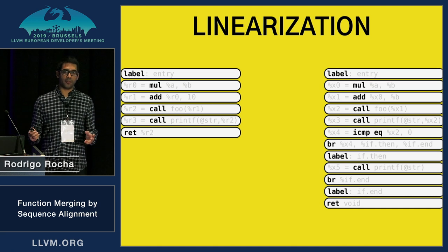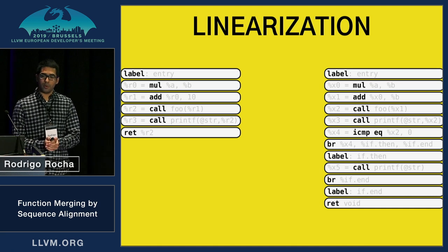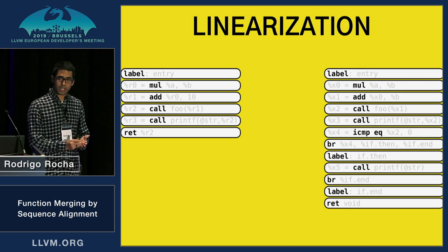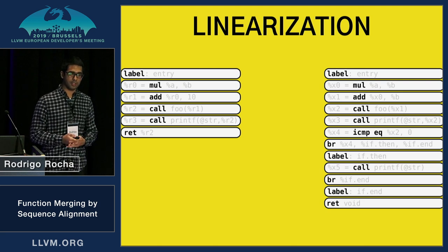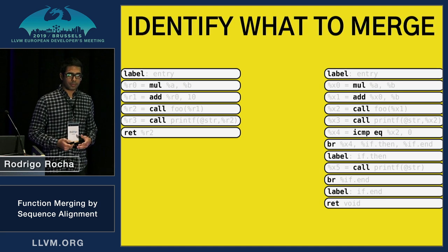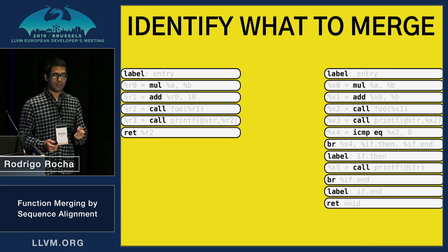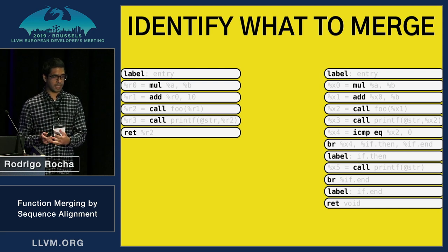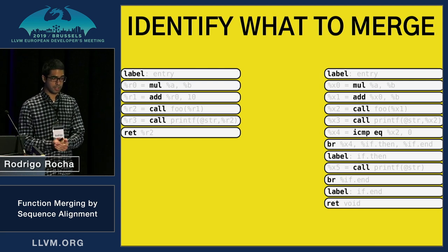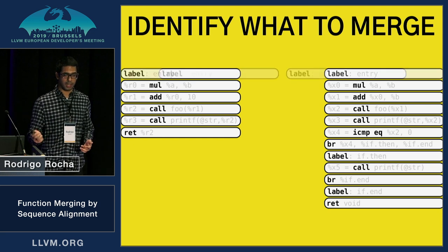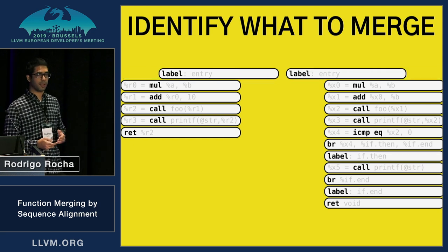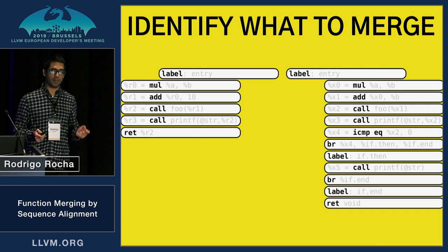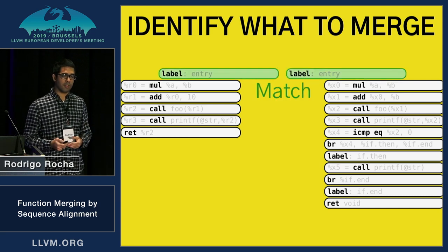Now that we have both functions in a linear form, we need a way to select what we can merge and what we cannot merge between these two functions. I'll illustrate just the concept of what we want to achieve — this is not exactly how we implement it; I'll talk about the actual implementation later. Starting from the top we have two labels, and labels we always consider as a match.